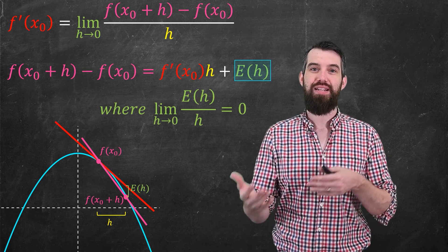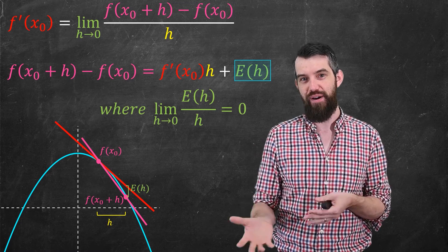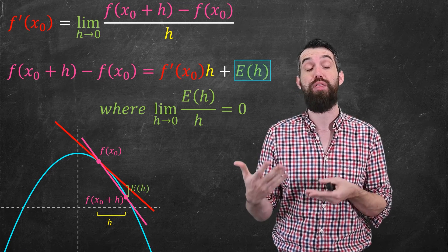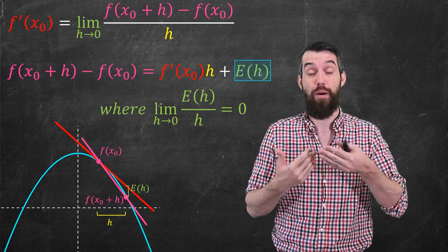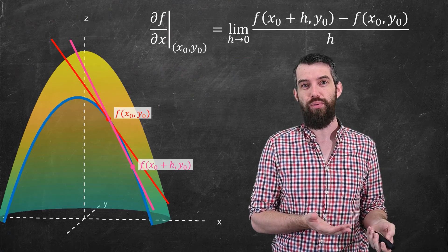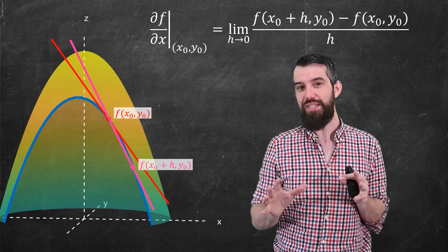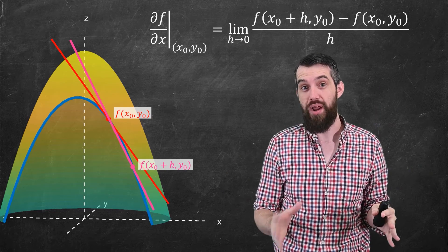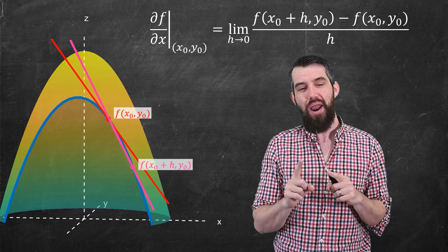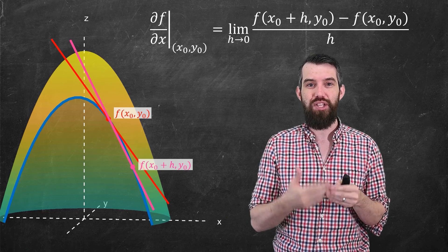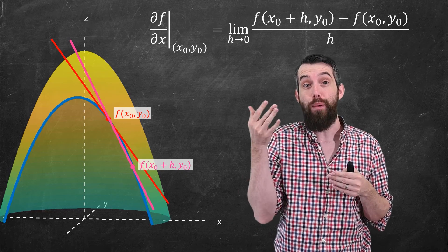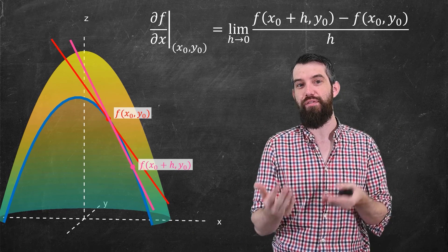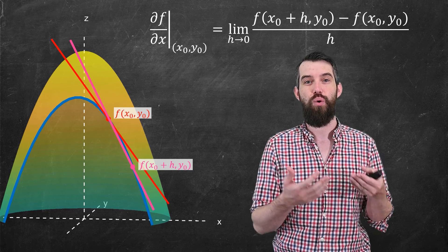Now we want to get to multi-variable differentiation. I'm going to use this second perspective — the error term perspective — to define differentiation of a multi-variable function. Instead of 1 minus x squared, I now have 1 minus x squared minus y squared, giving a nice surface. I'm considering some point, not just x0, but x0, y0, a point in two dimensions. The partial derivative of f with respect to x at the point x0, y0 is defined in the same sort of way — the limit as h goes to zero, keeping y fixed and letting x go from x0 to x0 plus h in the difference quotient.